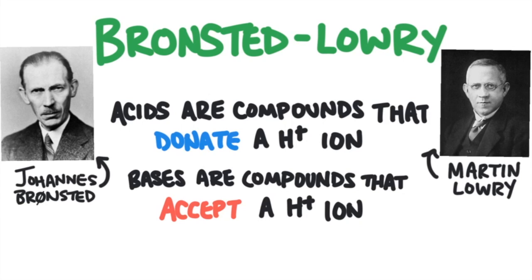The Brønsted-Lowry acid-base definition is a later definition, named after a Danish and an English scientist who, completely independently, published the same definition of acids and bases at the same time. Both found evidence that there were compounds that have all the properties of a base but do not include hydroxide ions, like ammonia.